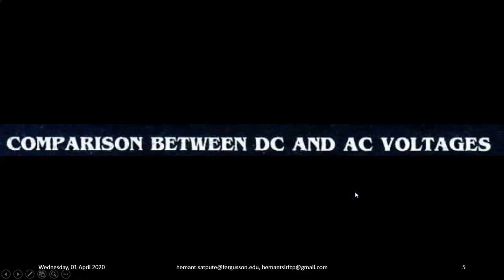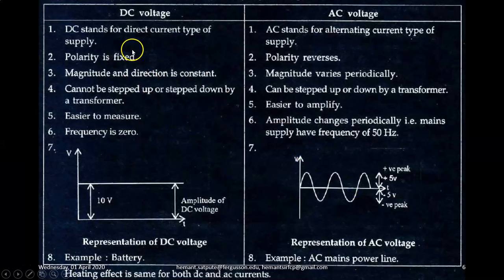Let's compare AC and DC voltages. DC voltages and AC voltages. DC stands for direct current type of supply, while AC stands for alternating current type of supply.